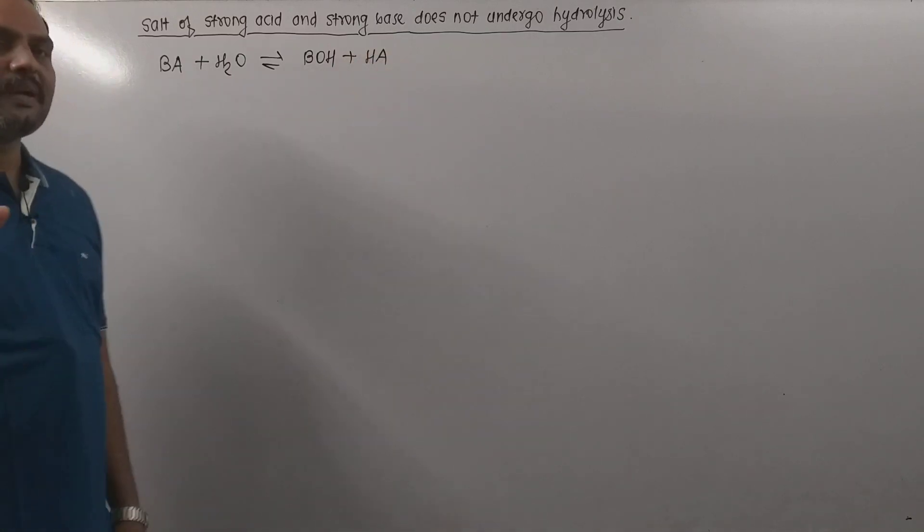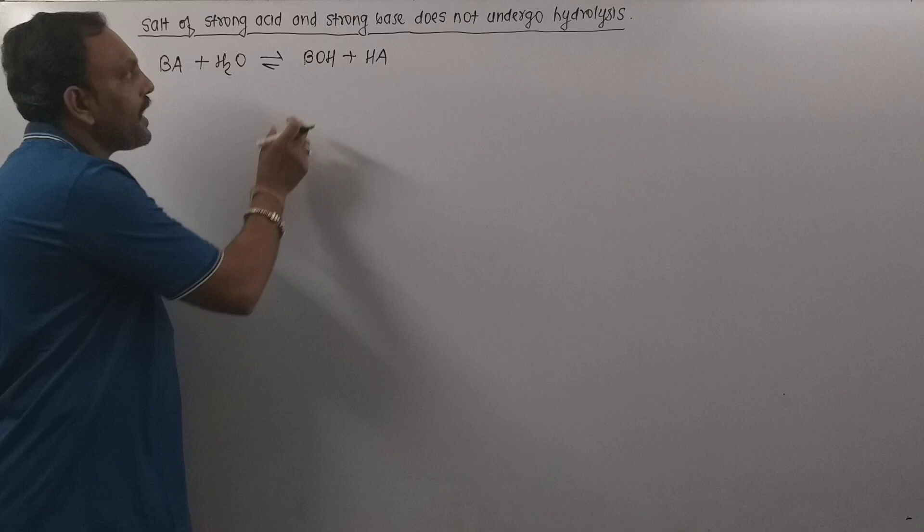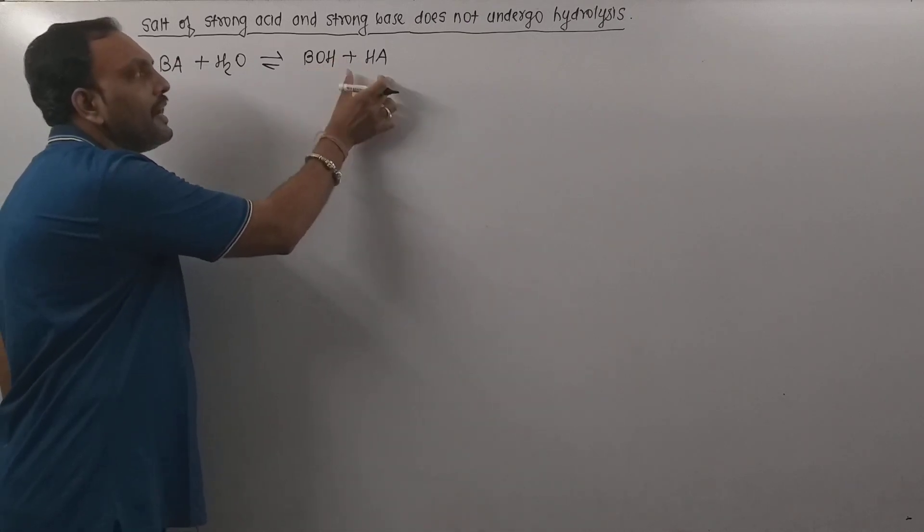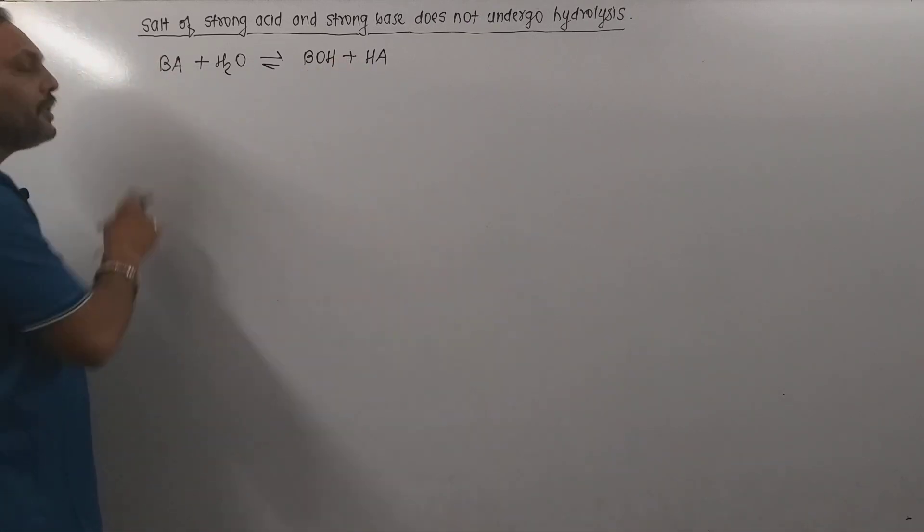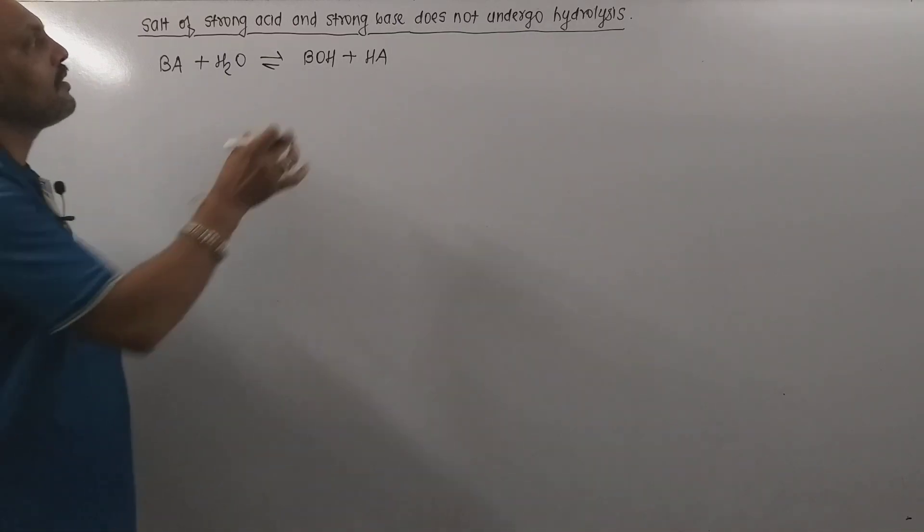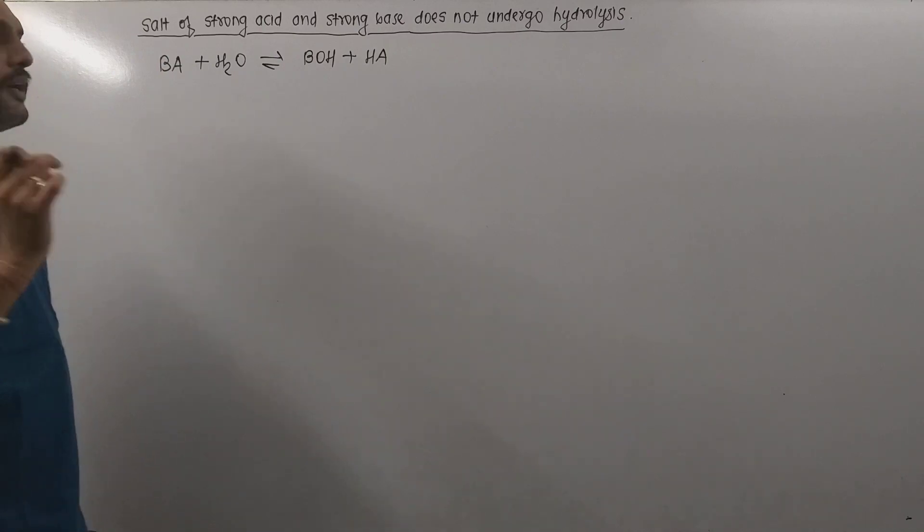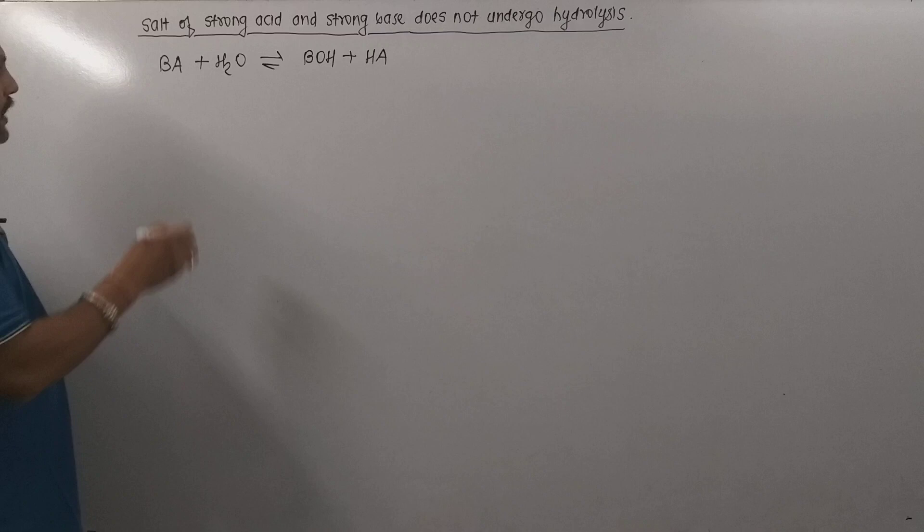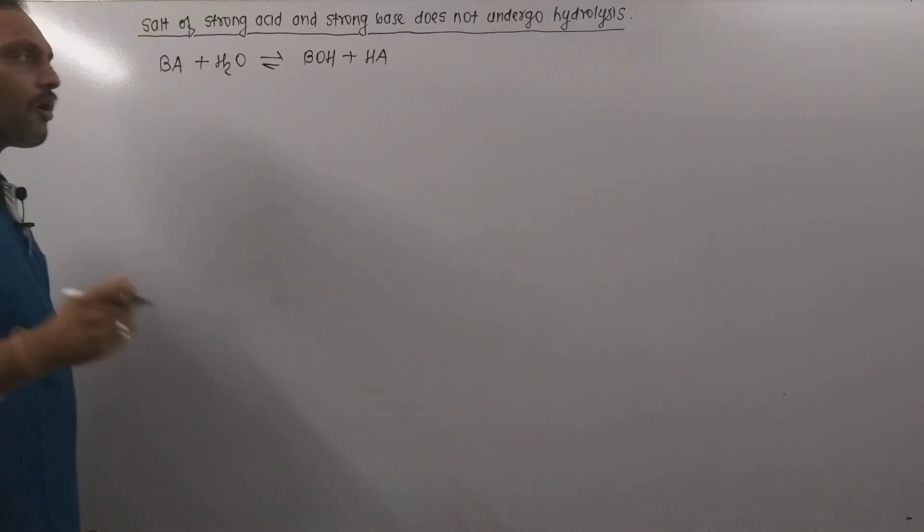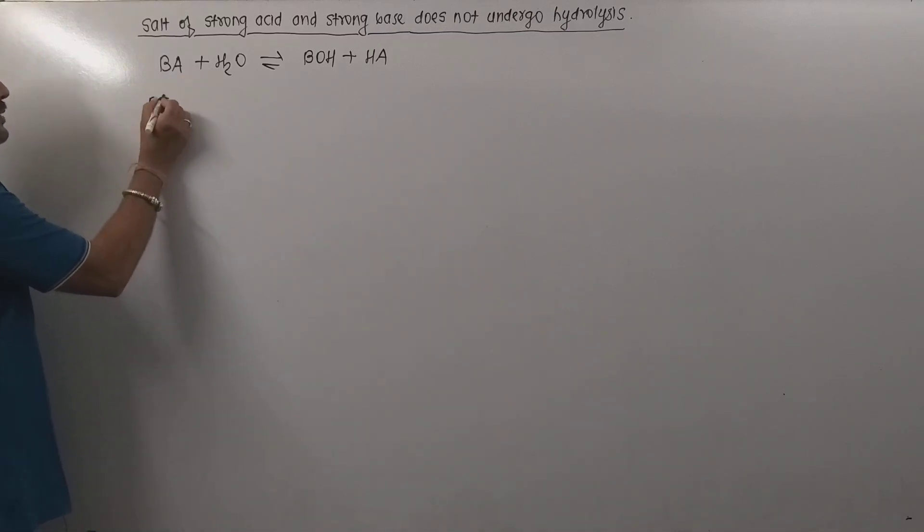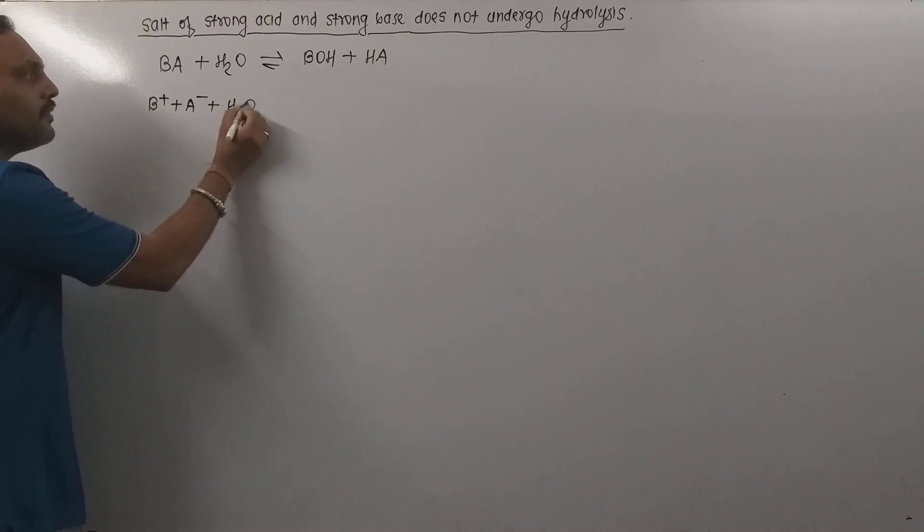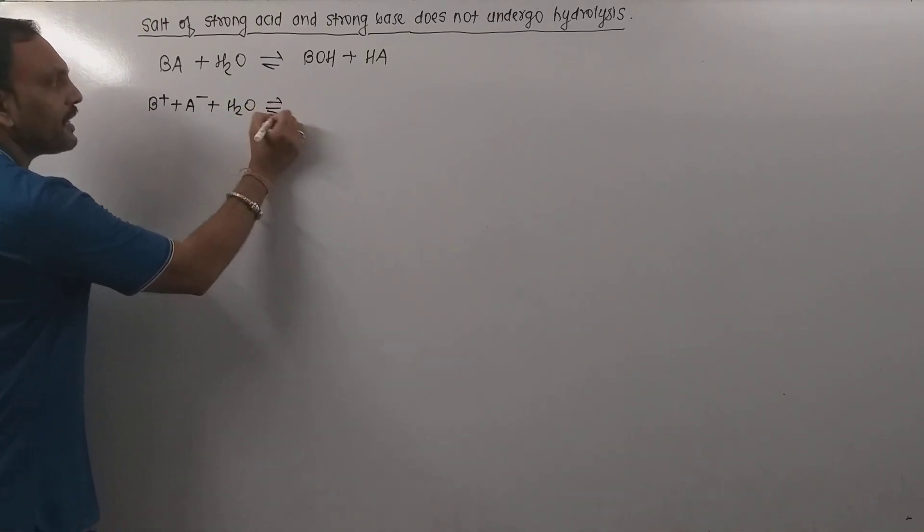Now the point to be considered is that the base and acid obtained on dissolution of salt BA in water are the stronger ones. Thus, the ionic reaction according to ionic theory can be given as: BA, that is salt being a strong electrolyte, dissociates into ions. So this can be given as B+ plus A-. Water is a weak electrolyte so remains undissociated.